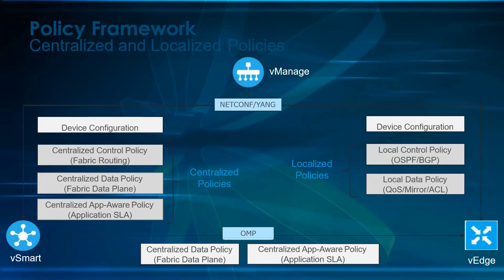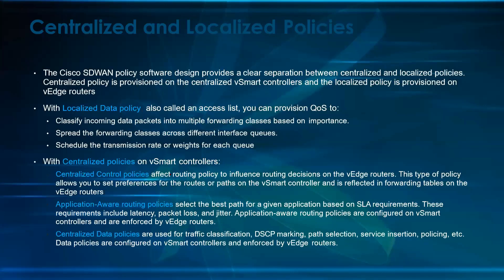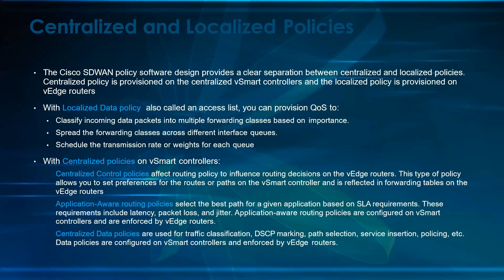When you want to see the localized policy, you can go on the vEdge and see that the configuration exists on the vEdge itself. So the localized policy is sitting on the vEdge and the centralized policy is sitting on the vSmart. The Cisco SD-WAN policy software design provides a clear separation between the centralized and localized policy — centralized policy is provisioned on the vSmart controller and the localized policy is provisioned on the vEdge router.